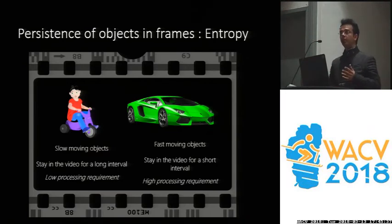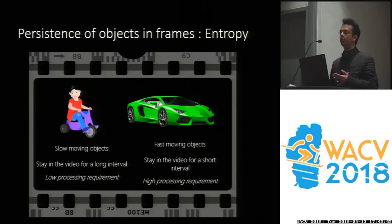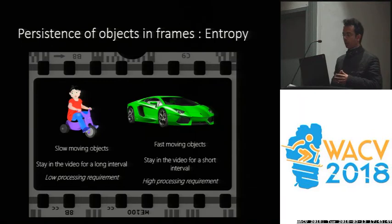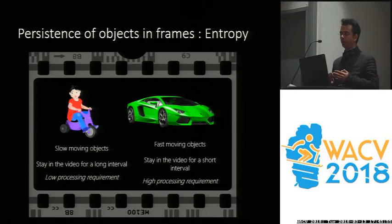However, if we are looking at a traffic situation where a lot of cars are moving fast, then you would have to keep processing many frames to be able to say how many objects were really in this video feed. So slow-moving objects have a lower processing requirement demand, while fast-moving objects have a higher processing requirement.